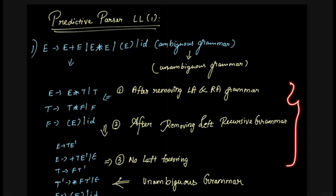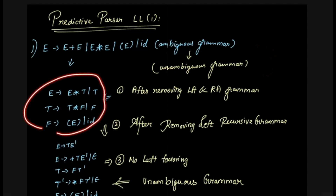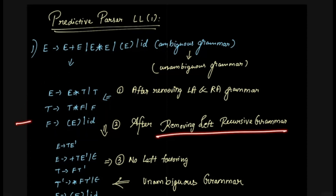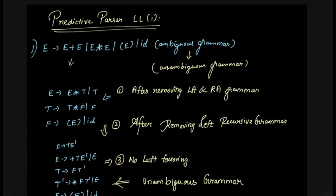The three steps are: left-associated and right-associated grammar, remove left-recursive grammar, and left-factoring. In this question, I will tell you about the unambiguous grammar. Left-associated and right-associated grammar removes the left-recursive grammar. The answer to left-factoring — but I will only focus on the unambiguous grammar here.